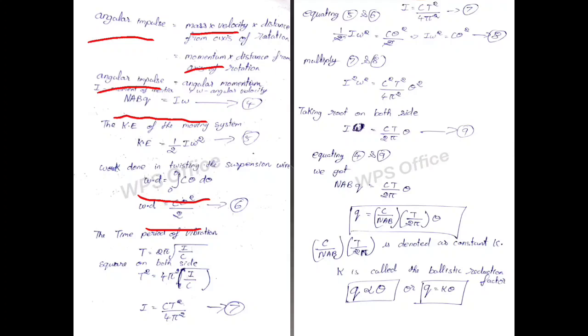The time period of vibration, T is equal to 2 pi square root of I by C. Square on both sides, so that the root can cancel and T square equals 4 pi square I by C. If we need I value only, so that the other element have gone to the null of tension, so that the equation 7 will be I is equal to C T square by 4 pi square.